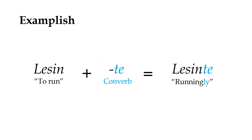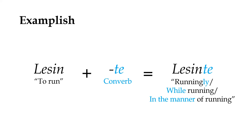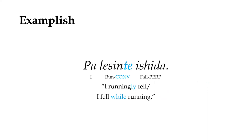To put it simply, a converb is a form that turns a verb stem into an adverb, such that a verb like to run becomes a word that means something along the lines of runningly, or while running, or in the manner of running. Once a verb stem has been made into a converb, it can be used to modify another verb in the same sentence, which for our example we can clumsily translate as I runningly fell, or I fell while running.